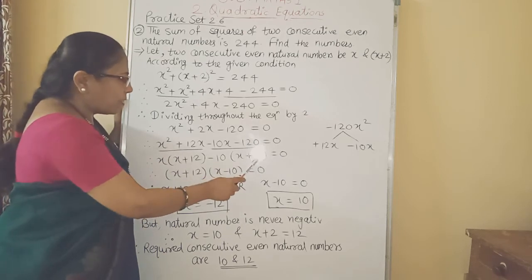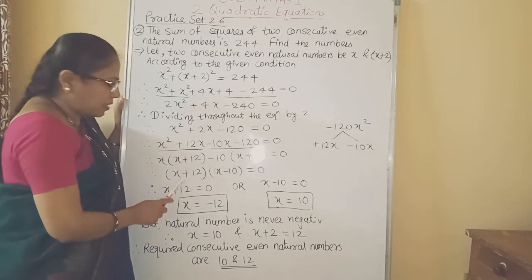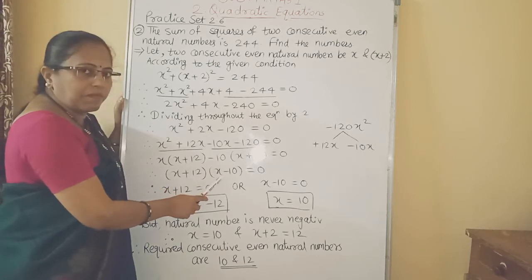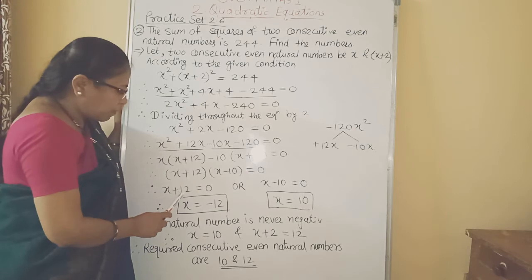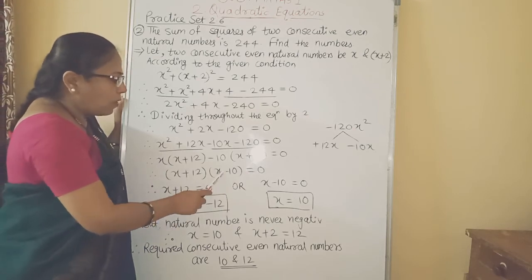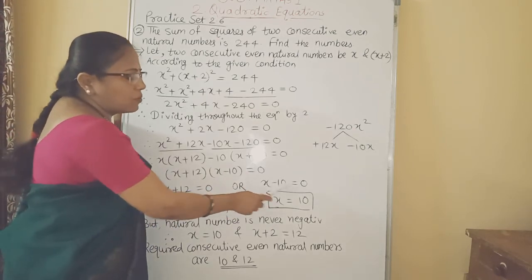So here we got x plus 12 is the first factor and x minus 10 is the second factor equal to 0. So either x plus 12 equal to 0 or x minus 10 equal to 0. Therefore x equal to minus 12 and x equal to plus 10.